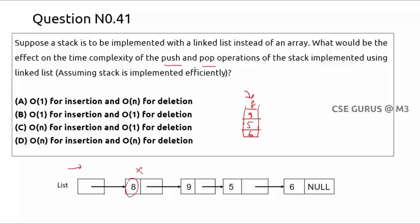For these two operations, what is the complexity? If I want to insert at the front or delete at the front, I can do it directly — I don't need to traverse any remaining elements. So that can be done in O(1) time. Therefore, option B is the correct answer. Push is insertion at the front; pop is deletion at the front — both O(1).